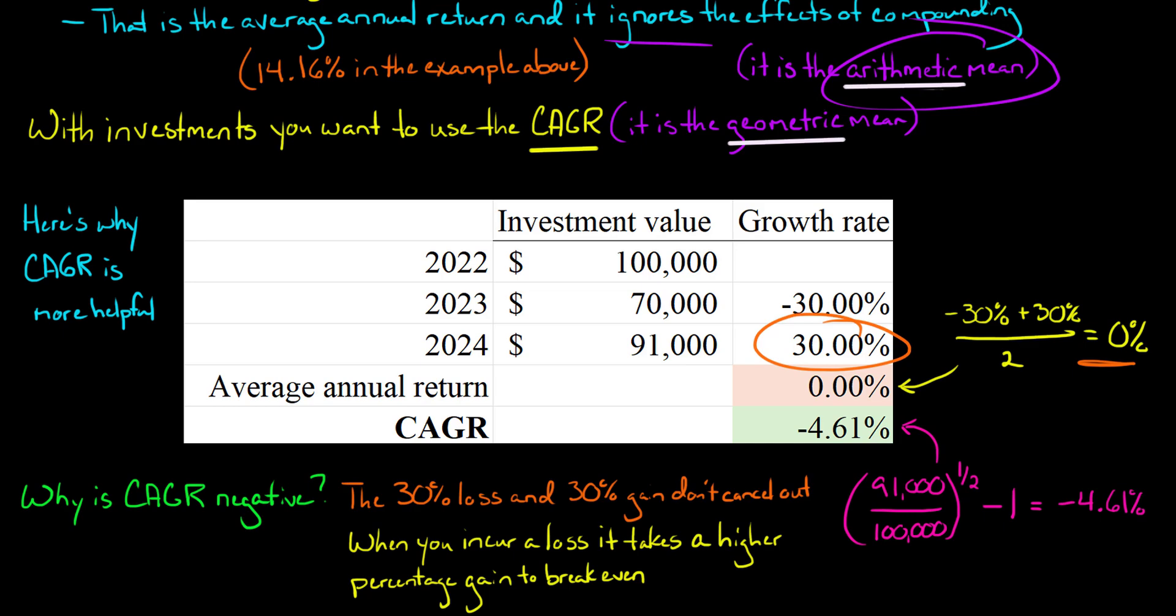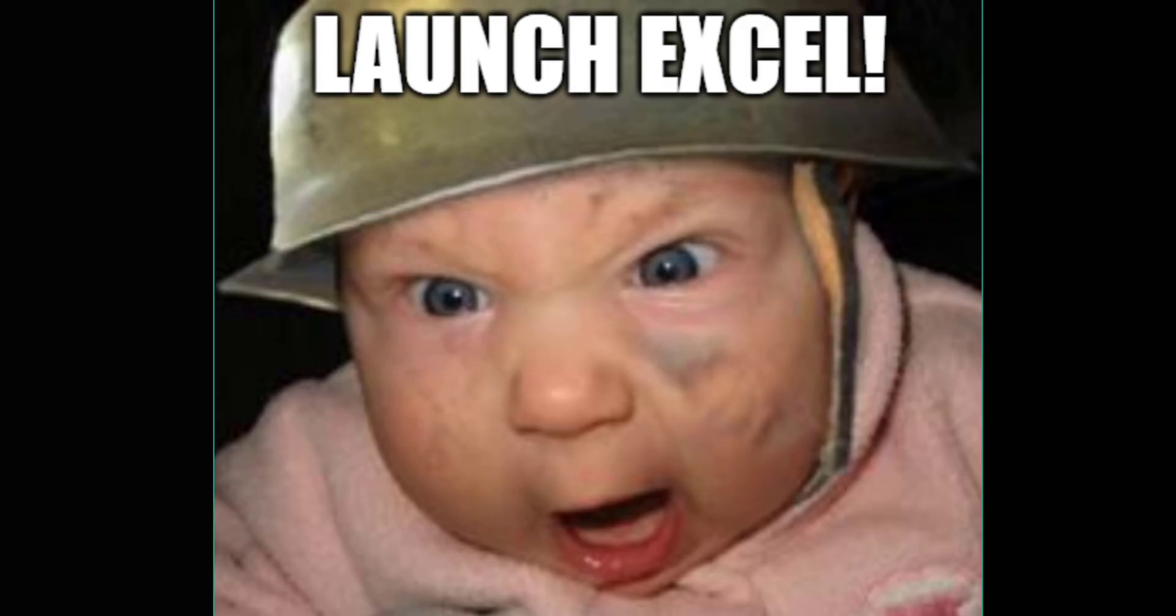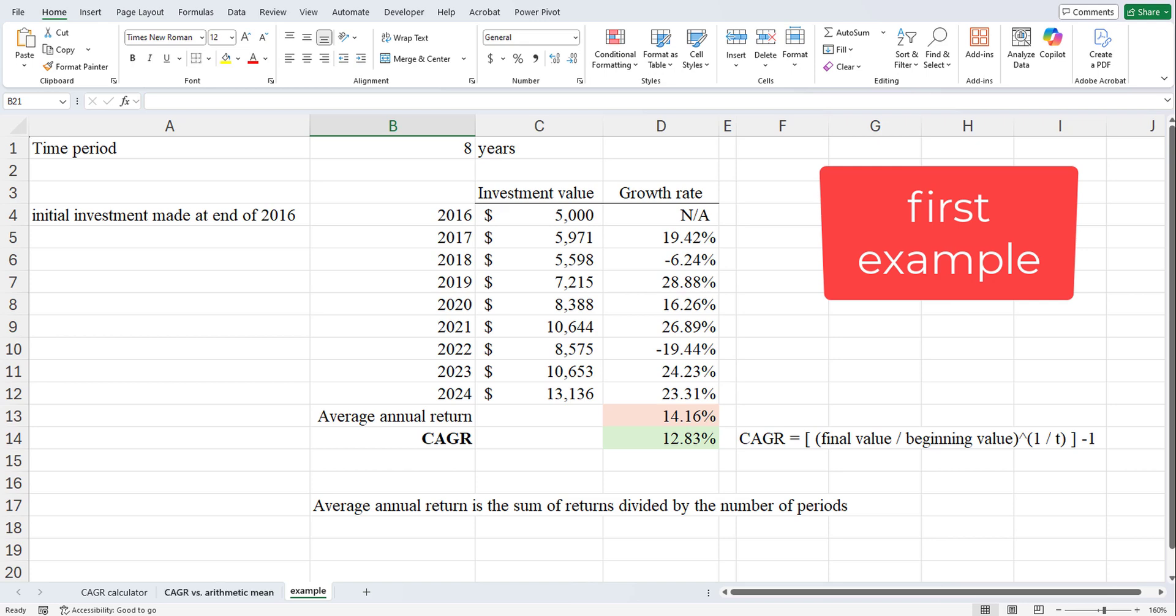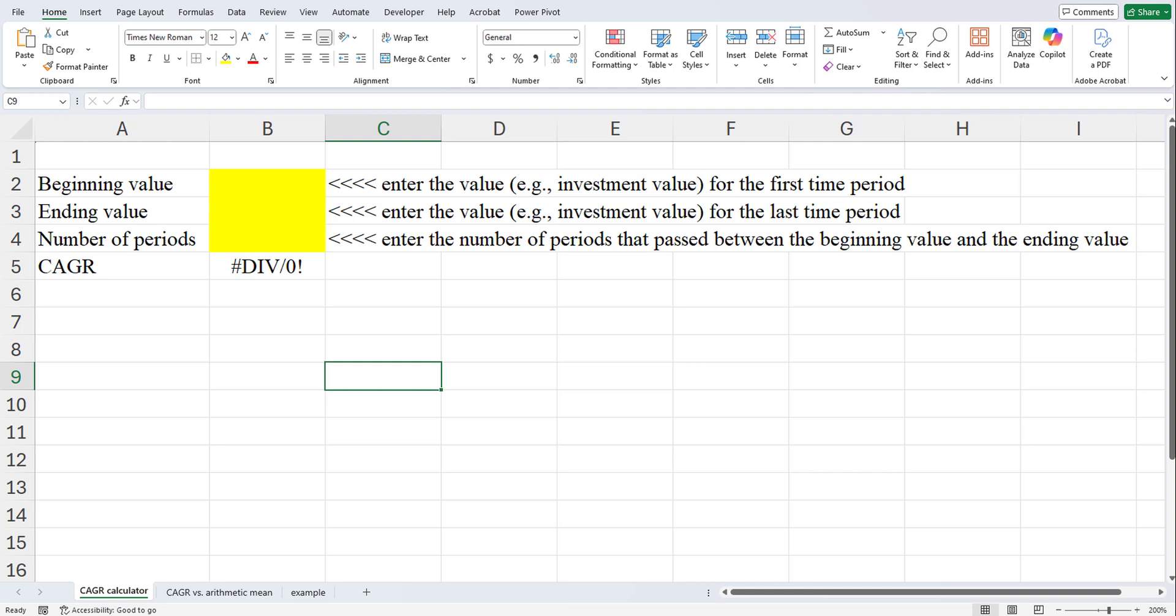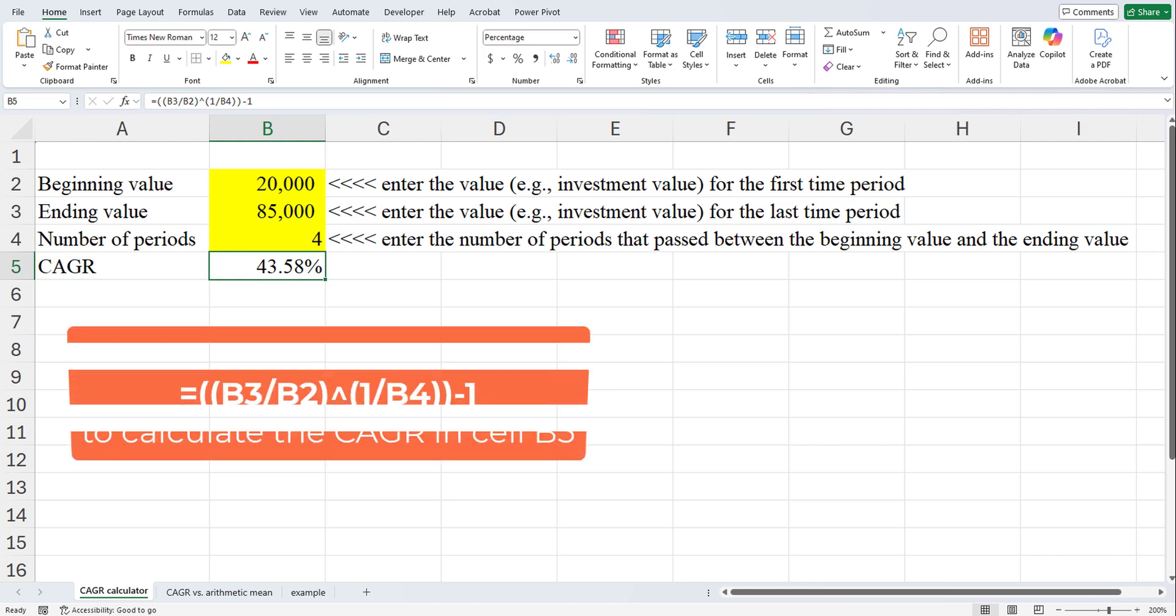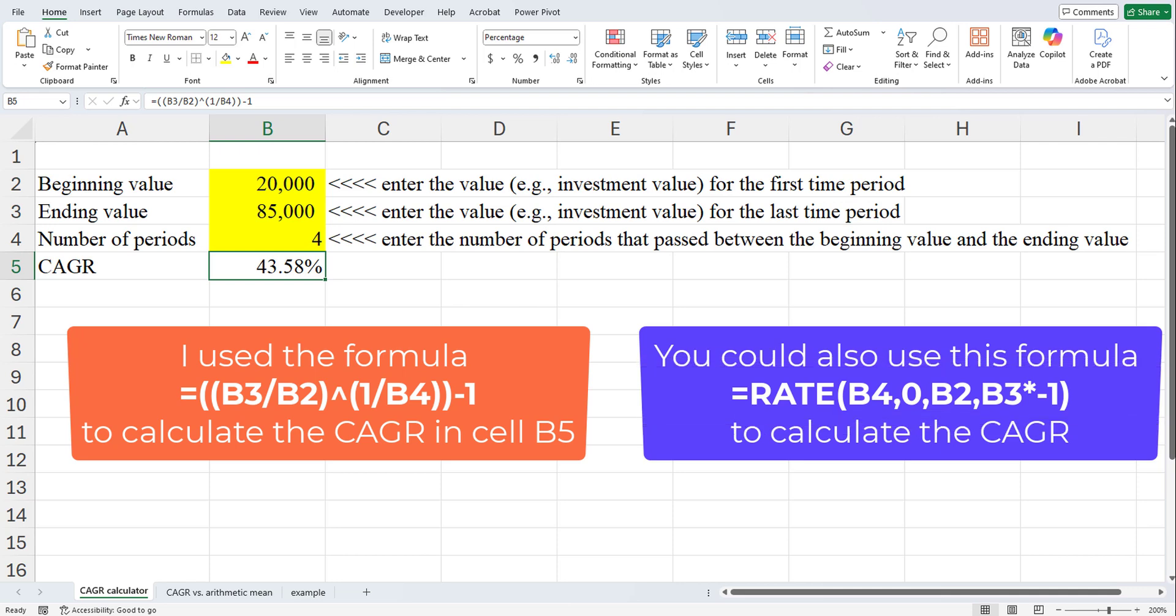Now, I will show you, I've got an Excel file I made with the examples here. And so just kind of showing you what I did. And then I also put together just a little basic calculator. So if you wanted to say, I've got an investment and I put in $20,000 and then later the ending value a few years later is $85,000. How many years later? Let's say four and then you have a compound annual growth rate of 43.58%.